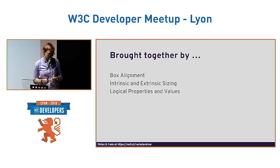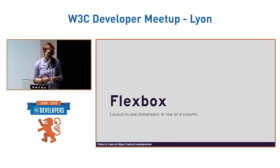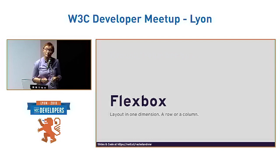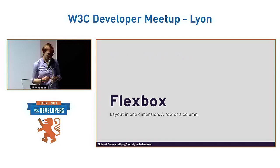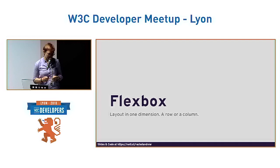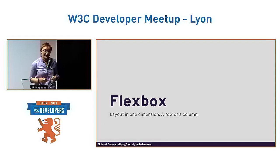Starting with Flexbox: this spec was designed to lay things out in a single dimension — that means as a row or as a column, not both at once. A row in Flexbox relates to the writing mode of the document. If I've got three items and they're laid out in a single line, I add display flex and the initial values of Flexbox start to take effect, so the items display as a row and they start at the start edge.